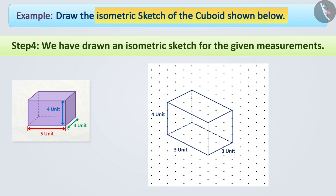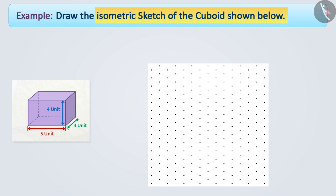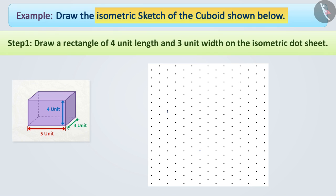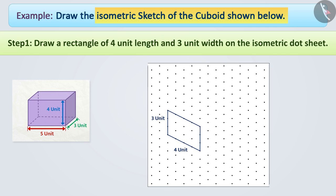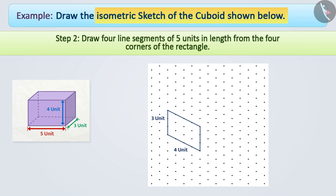We can also draw isometric sketches in different ways. Let's draw the isometric sketch of this cuboid in different ways. Step 1: First, we will draw a rectangle of 4 units length and 3 units width on the isometric dot sheet. Step 2: Draw 4 line segments of 5 units in length from the 4 corners of the rectangle in this way.